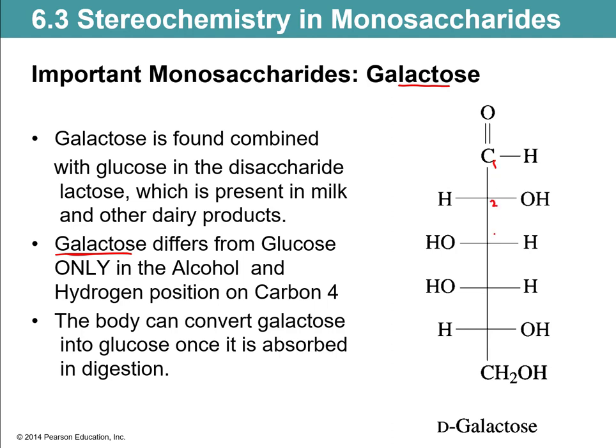Remember the numbering: carbon one, two, three, and there's carbon four. So for glucose, the alcohol group on carbon four is on the right. For galactose, the alcohol group is on the left — that's really the only difference. Other than that, it looks exactly the same. But that one difference makes this not your blood sugar. The body actually absorbs galactose and then converts it to glucose in order to be used.